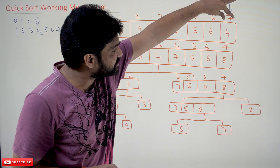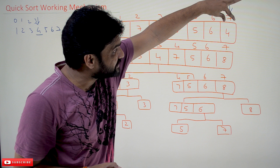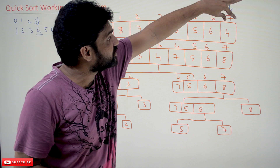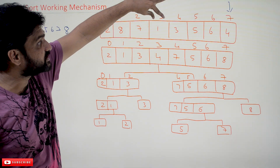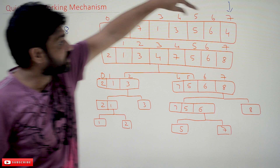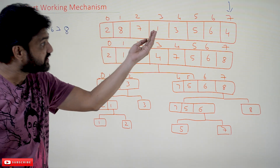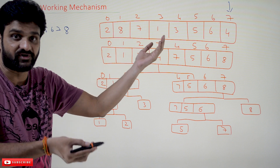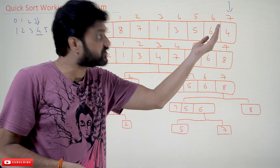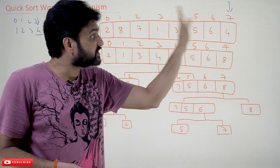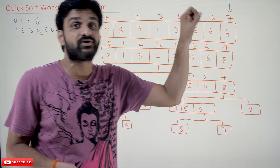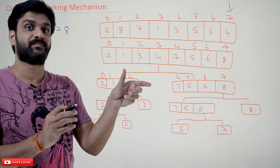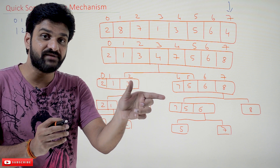So we are going to place this element into its correct position in sorted order, which is at index 3. It will get shifted into that position. All elements to the left of it will be less than or equal to the pivot element, and all elements to the right of it will be greater than or equal to the pivot element. This is how the partition algorithm works.